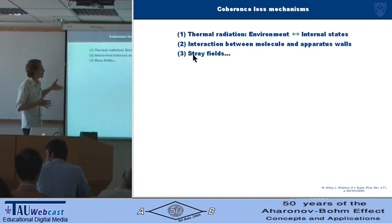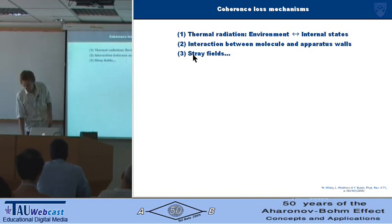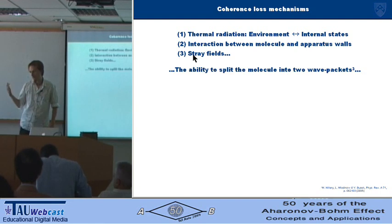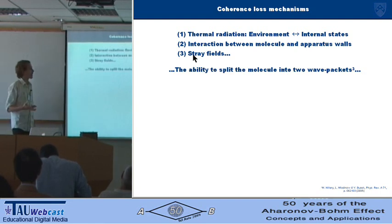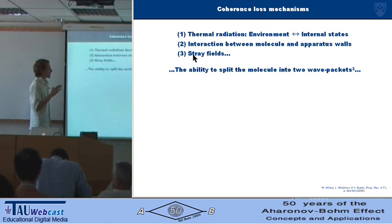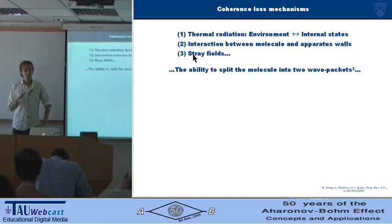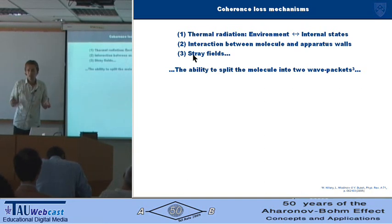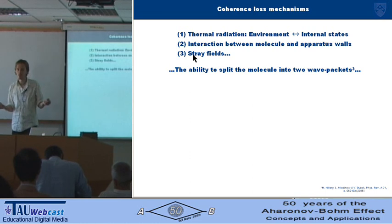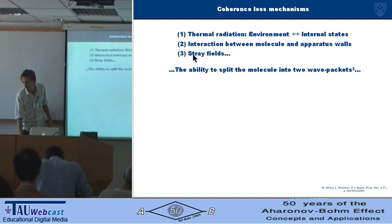But all these things you can make smaller—there are things you can do about them. However, there's one thing about the experiment that fundamentally removes the translational symmetry that you can't get rid of. And that's the fact that you have to split the wave packet into two. And this will necessarily couple the centre of mass and the internal coordinates, so that you're going to lose some contrast in your interference experiment.